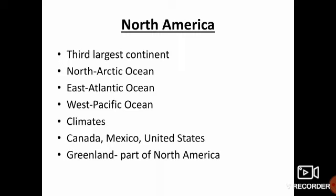North America is the third largest continent. It is surrounded by the Arctic Ocean in the north, the Atlantic Ocean in the east, and the Pacific Ocean in the west. North America has several types of climates. Canada, Mexico and United States are the major countries of North America. Greenland, the largest island in the world, is a part of North America.